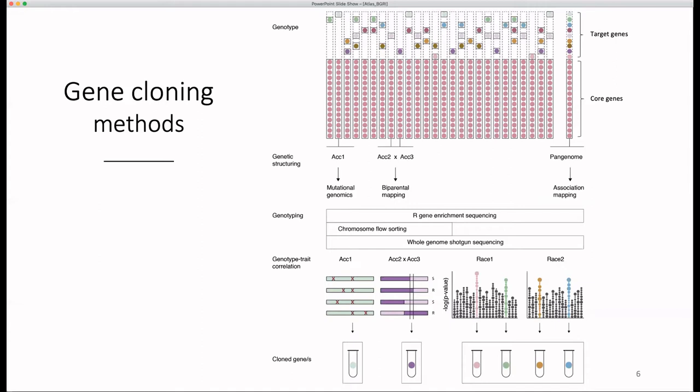So if our aim is to create a large catalogue of R genes for breeding and to do this rapidly, association genetics may be the most efficient approach.